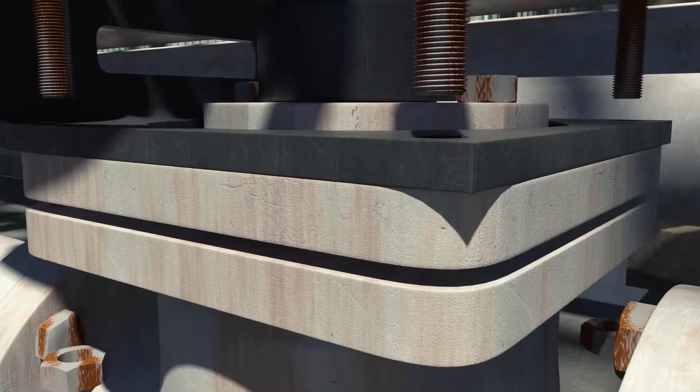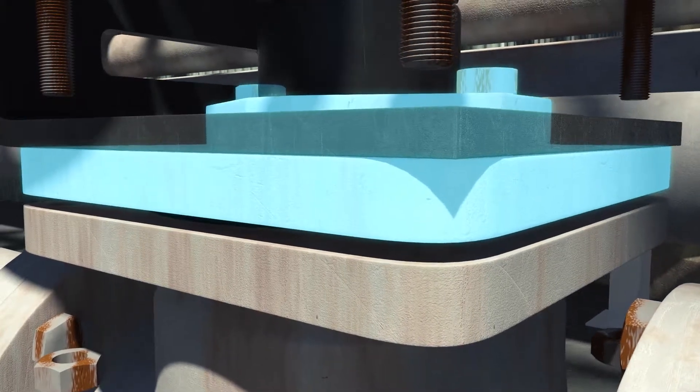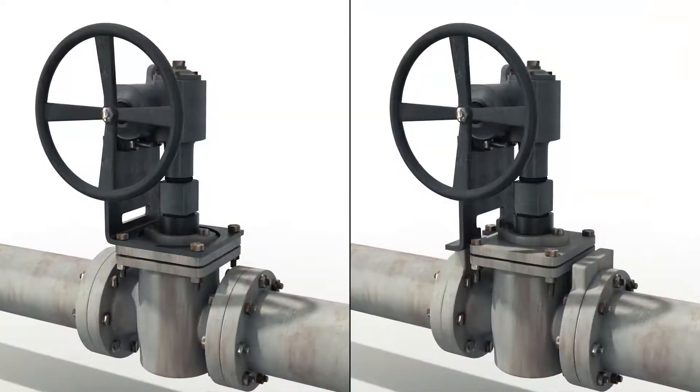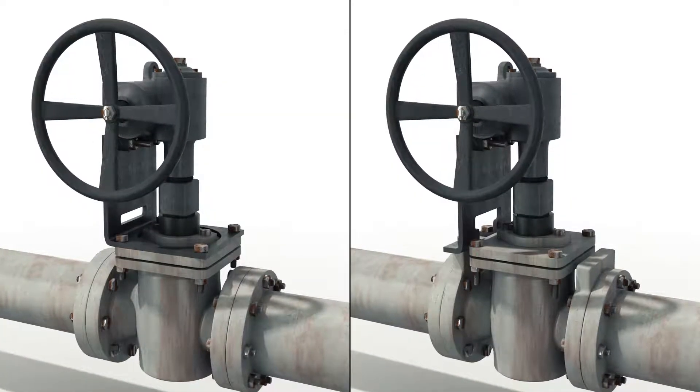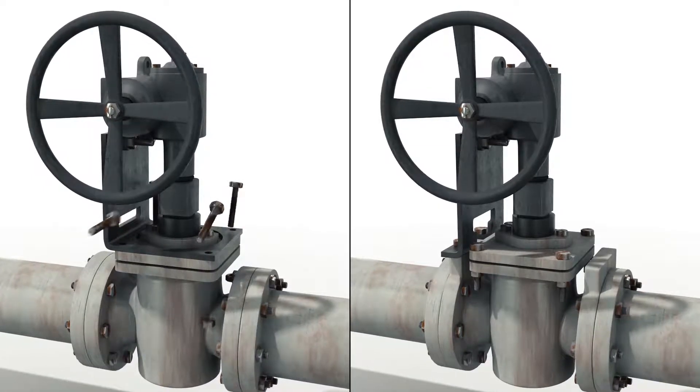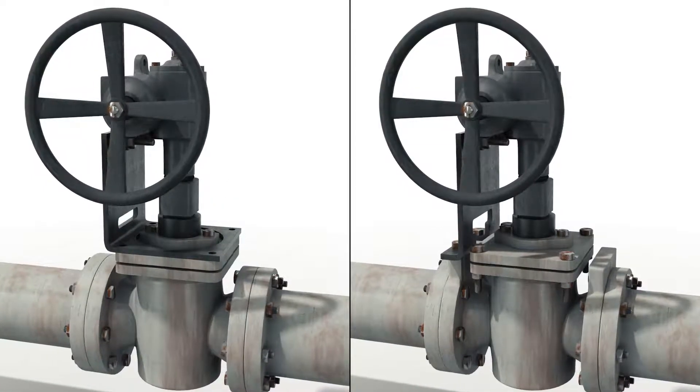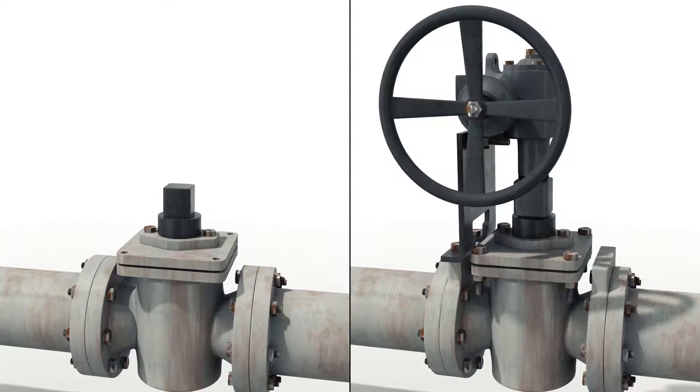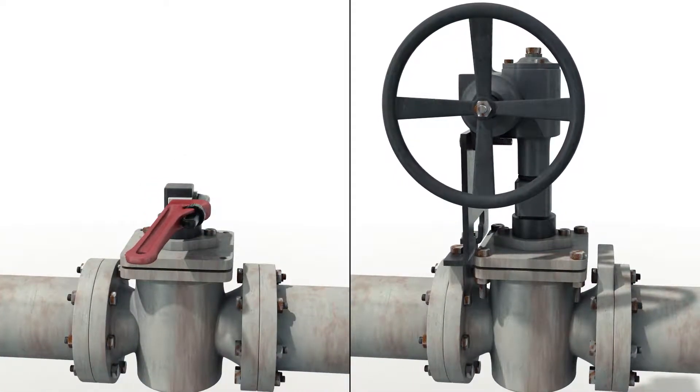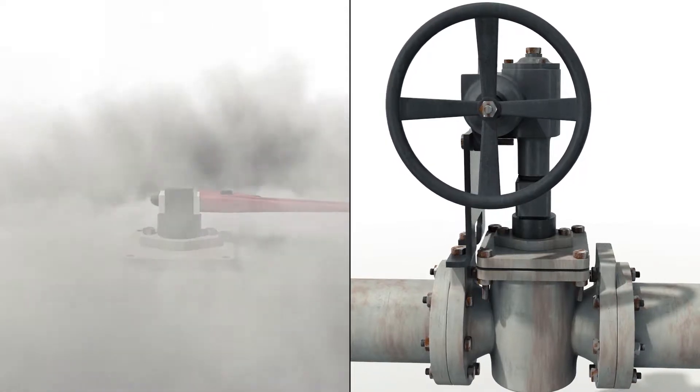these bolts also secured a critical pressure-containing component of the valve known as the top cap. Approximately 1% of the numerous plug valves in the refinery's alkylation unit were designed so that the gearbox support bracket attached to the top cap. With this 30-plus-year-old design, removal of the gearbox support bracket can have catastrophic consequences.